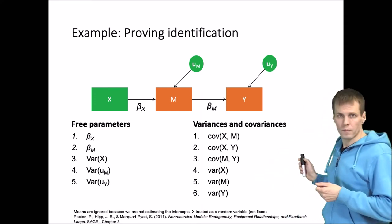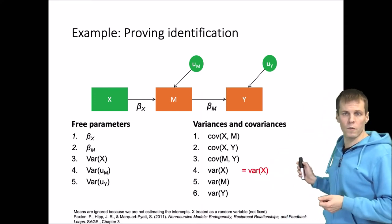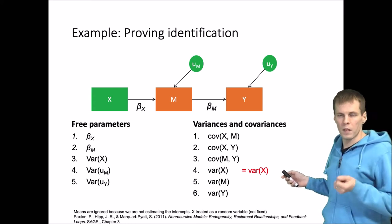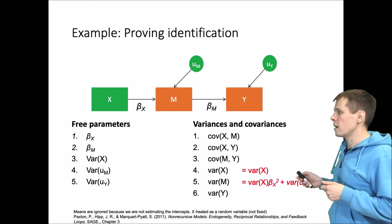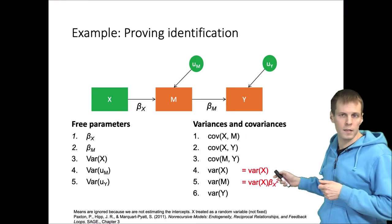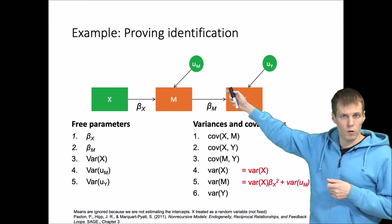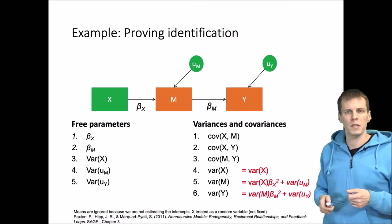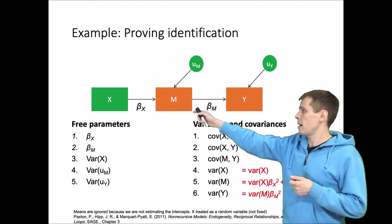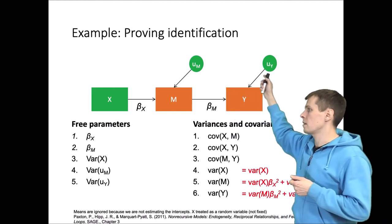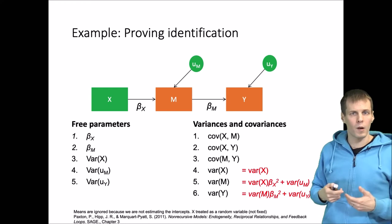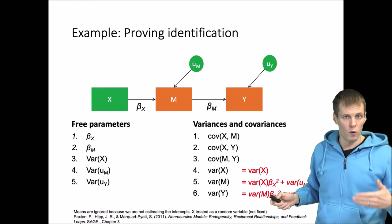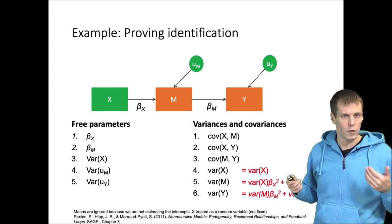We'll start by writing the easy part. The variance of X is simply the variance of X — it doesn't depend on the model because X is exogenous. Then the variance of M is beta_X squared times the variance of X plus the variance of the error term. The variance of Y is calculated similarly, and it's simpler to express it as a function of the variance of M, which we would know if we had the data.